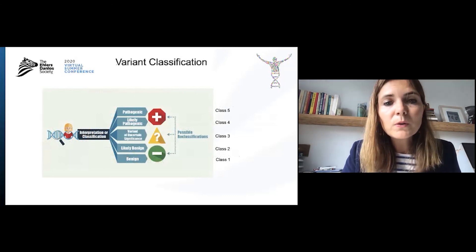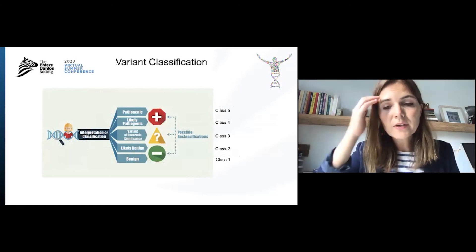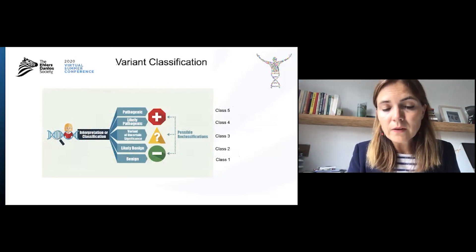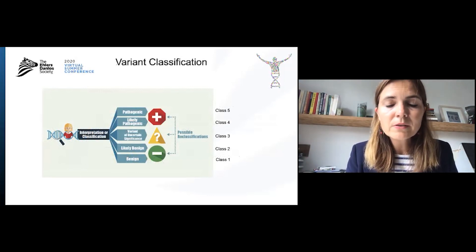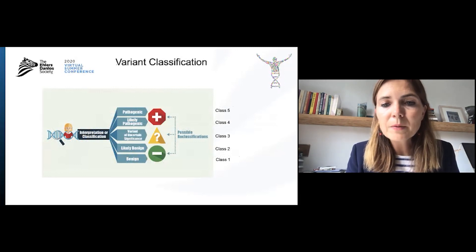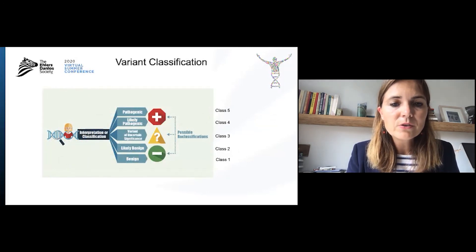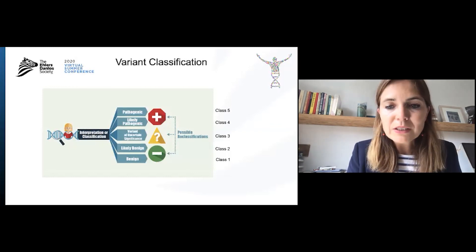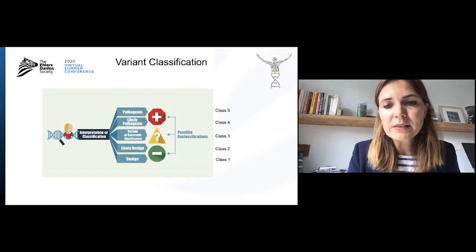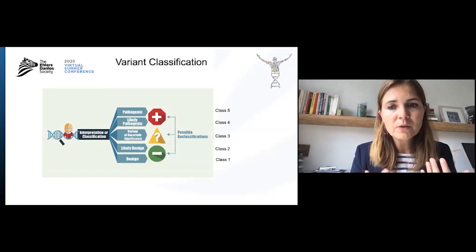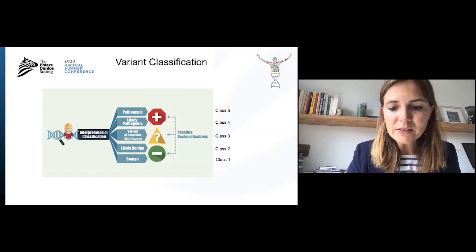Labs will classify variants into five categories. The benign and likely benign variants are class one and class two respectively. The pathogenic and likely pathogenic variants are class five and class four respectively. A variant of uncertain significance is classified as class three. Labs will usually not report class one and class two variants. They will always report class four and class five variants. Whether they report a class three variant depends on different lab policies.